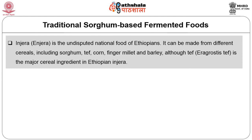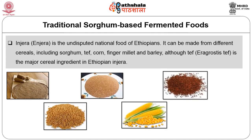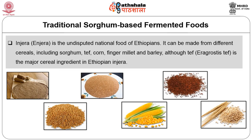Injera is the undisputed national food of Ethiopians and can be made from different cereals including sorghum, tef, corn, finger millet and barley, although tef is the major cereal ingredient. To make Injera, the grains are de-hulled manually or mechanically and milled into flour. This flour is mixed with water to form a dough, a starter is added, and the dough is fermented for two or three days. The starter is the fluid saved from previously fermented dough. After fermentation, the dough is thinned to a thick batter and poured onto a lightly oiled pan, covered with a tightly fitting lid to retain steam, and within 2 to 3 minutes it is ready.